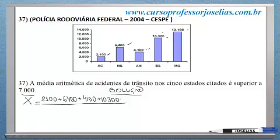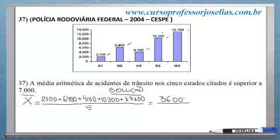Mais Espírito Santo, 10.300, mais o último, Minas Gerais, 13.100. Nós temos 5 estados, então você soma a quantidade e divide por 5. Somando no numerador: 2.100 + 6.400 + 4.100 + 10.300 + 13.100, nós vamos encontrar exatamente 36.000 dividido por 5, que nos dará 7.200.